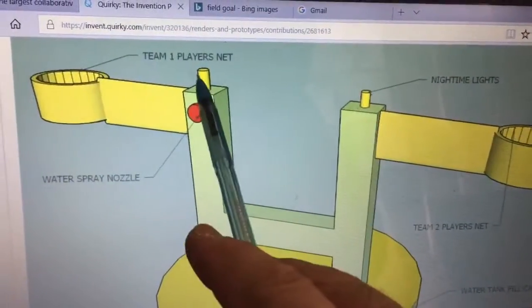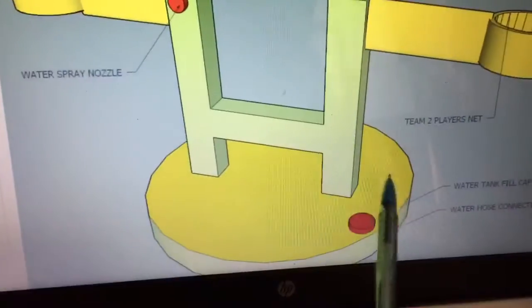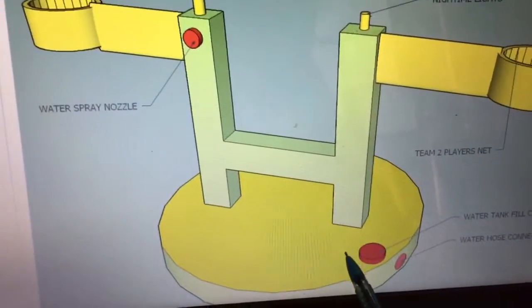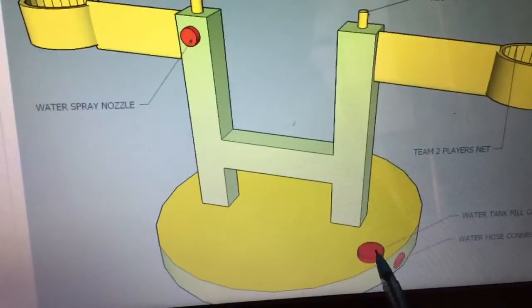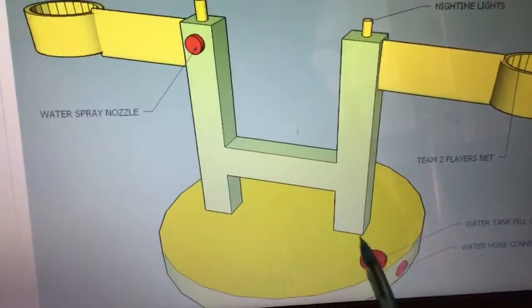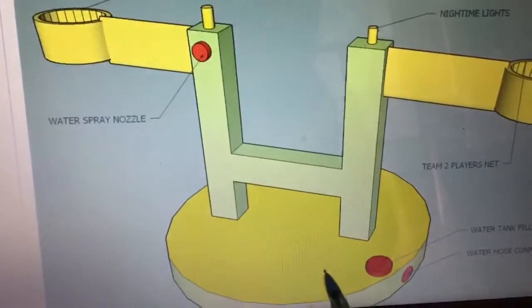There's nighttime lights for nighttime play, and there's a weighted base, which is actually a plastic tank with a removable cap. You fill it up with water and it supports the whole game structure.